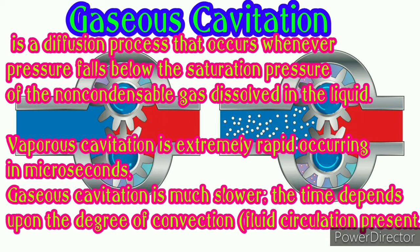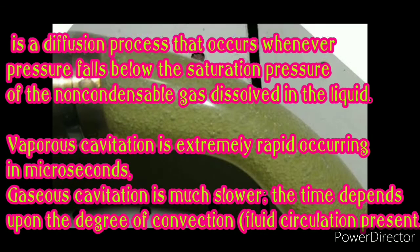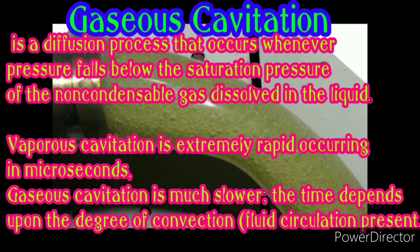Vaporous cavitation is extremely rapid, occurring in microseconds, while gaseous cavitation is much slower. The time depends upon the degree of convection and fluid circulation present.